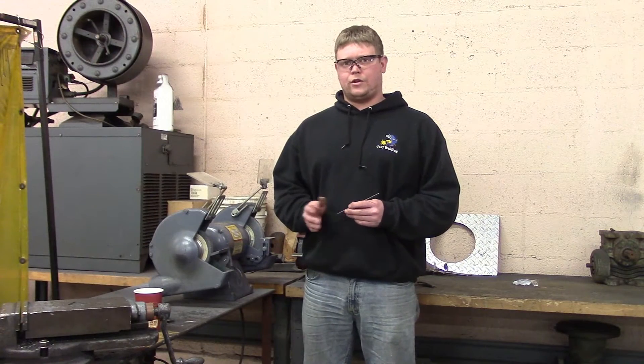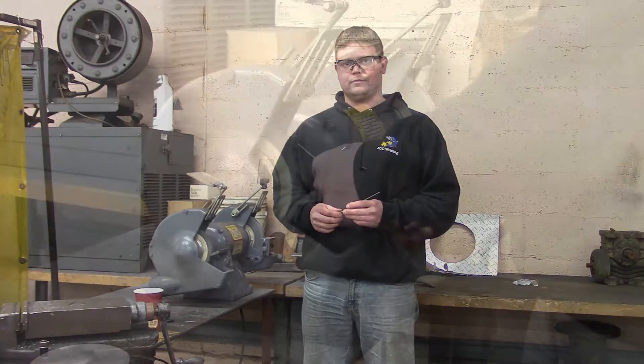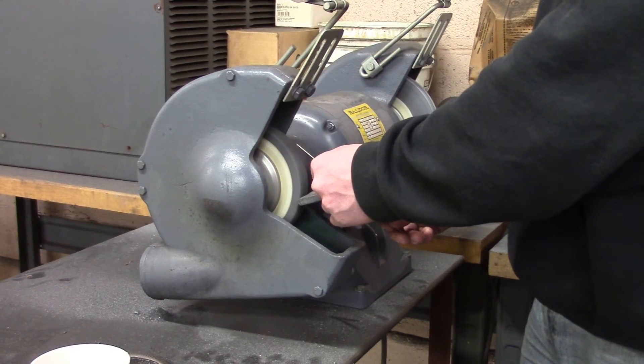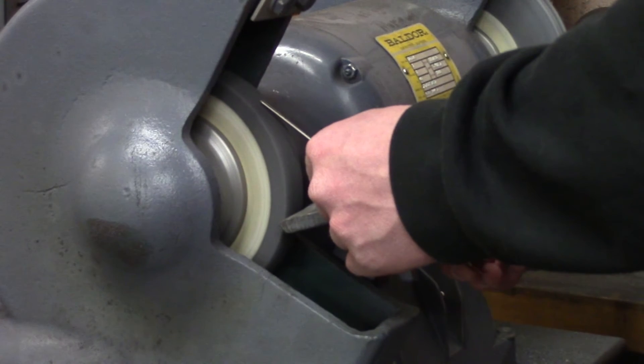All right, we just showed you how to do the incorrect way to grind tungsten. Now we're going to show you how to do the correct way. All right, this is the correct way. You want the tungsten going with the direction of the grind. So we'll get it going here.